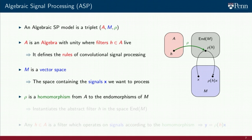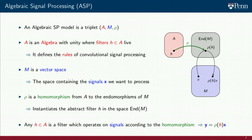The third component, rho, is a homomorphism from the abstract algebra A to the algebra of endomorphisms of M. It instantiates the abstract filter H in the space N of M, making the filter into a linear transformation that we can apply to the signals X. Any filter H in the algebra A can operate on the signal X as dictated by the homomorphism. The result of applying H to a signal X is the linear transformation rho of A applied to the signal X. We have seen that graph signal processing is a particular case of algebraic signal processing, and we will see that several other versions of signal processing are possible. The value of algebraic signal processing is that it provides a common framework for the joint investigation of their shared fundamental properties.